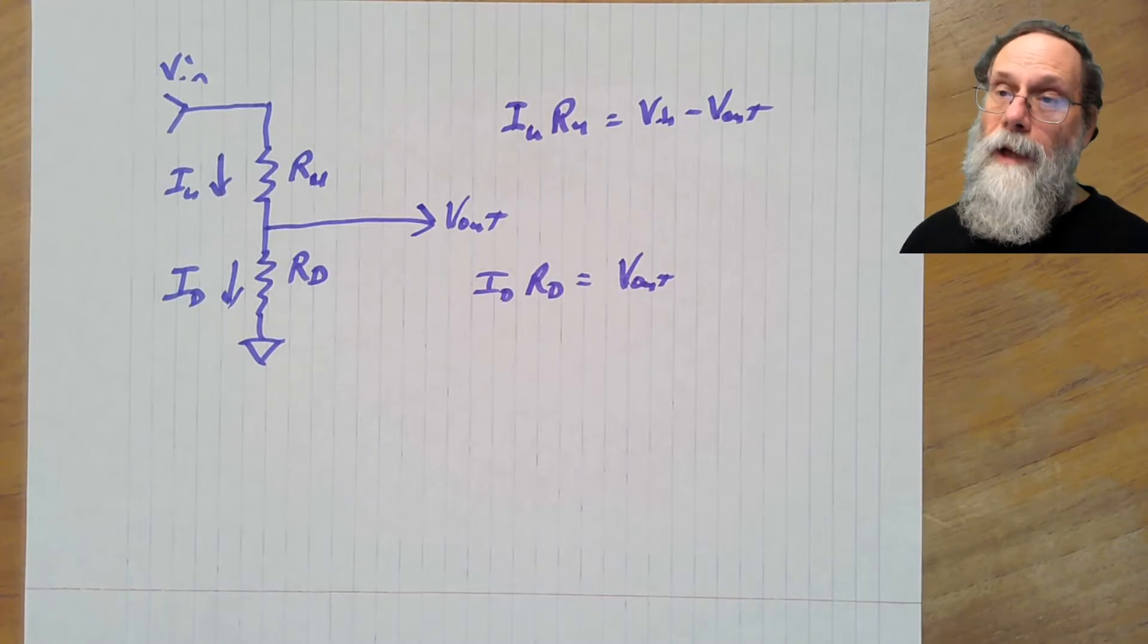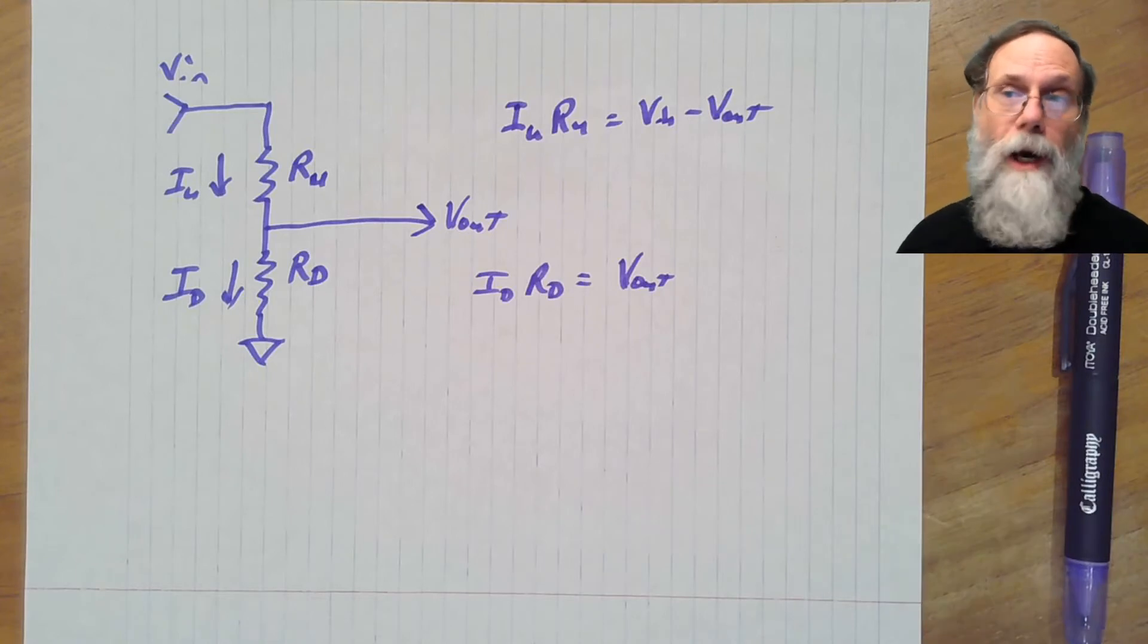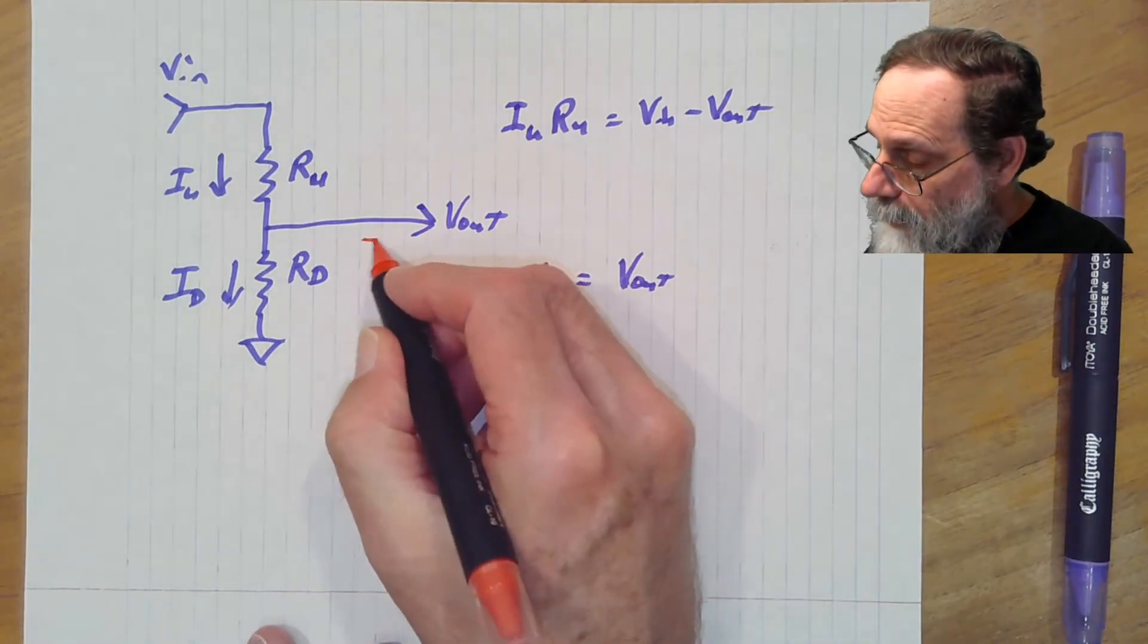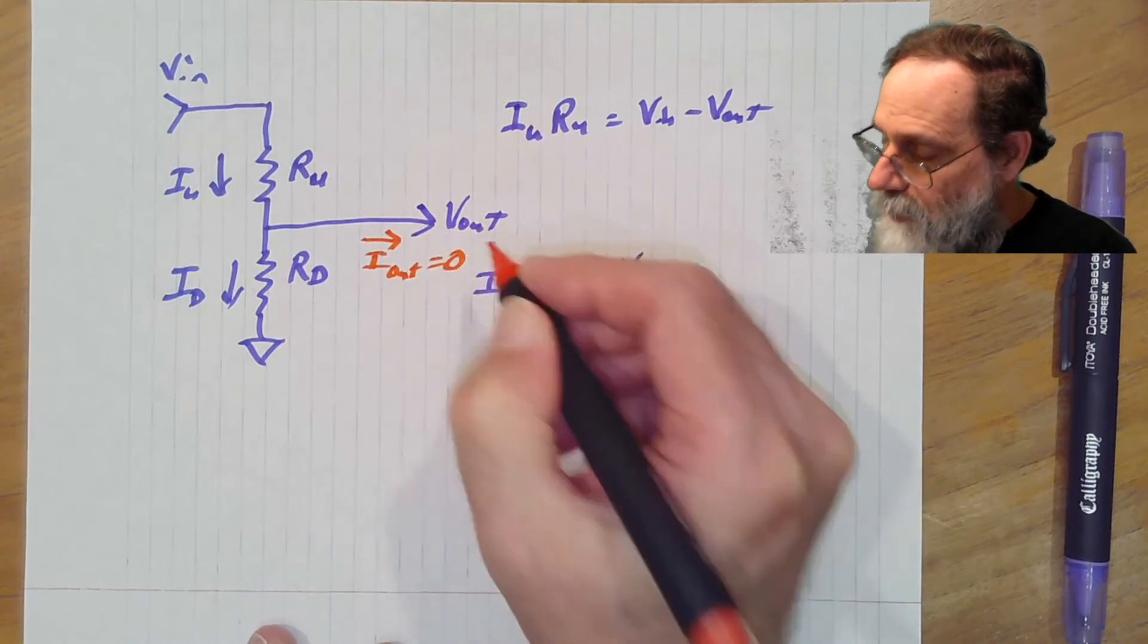This looks like possibly all we can do, but if we add one more constraint to this system, we can do quite a bit more. And that is if we say that the current through here, the output current, is zero.